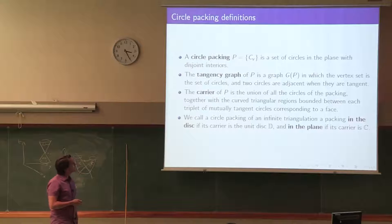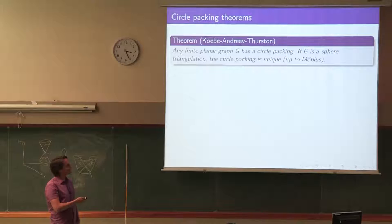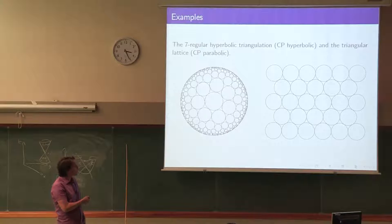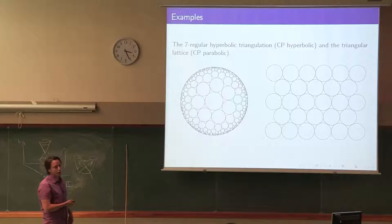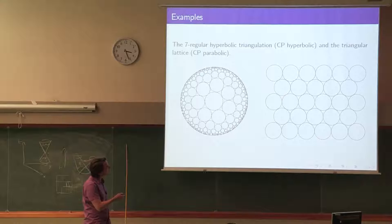We say we have an infinite circle packing of a triangulation if we can circle pack it in the disk (carrier is the disk) or in the plane. Here's an example: this is the semi-regular hyperbolic triangulation with infinitely many circles converging to the boundary of the disk, while the triangular lattice, whose carrier is the entire plane, is the parabolic example.